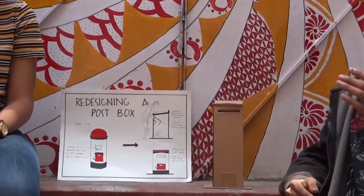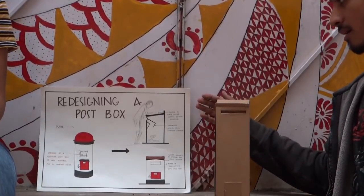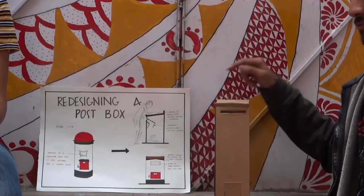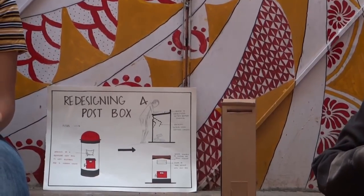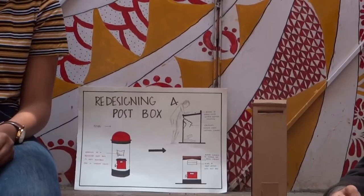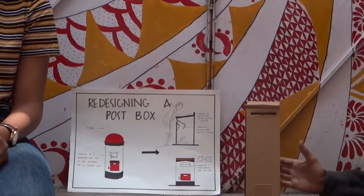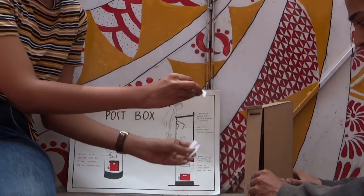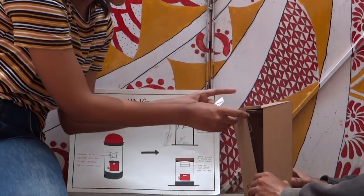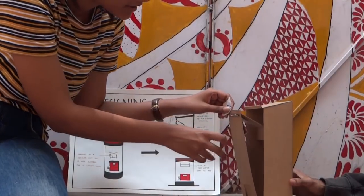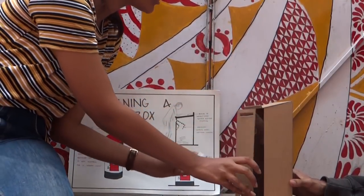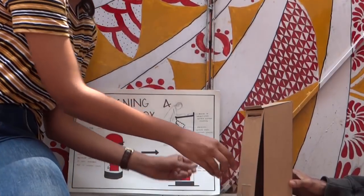It also protected from rain and dust. It had a flat top which you could use to write your letters or stick your stamps. When you put your letter in, there is a channel that takes the letter all the way down so you don't have to physically put your hand in and push the letter down.